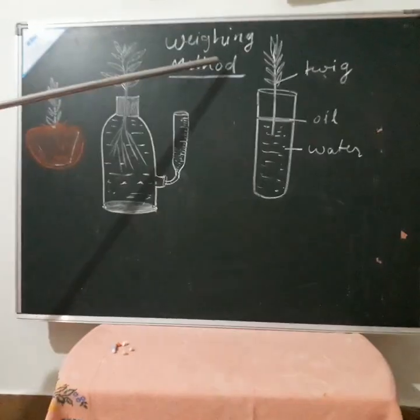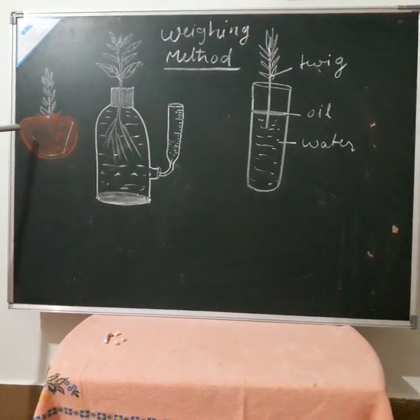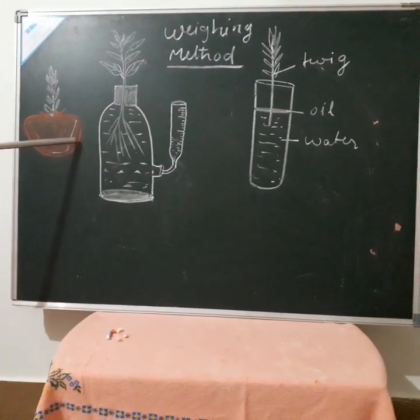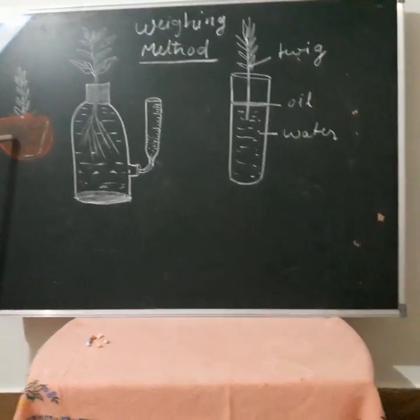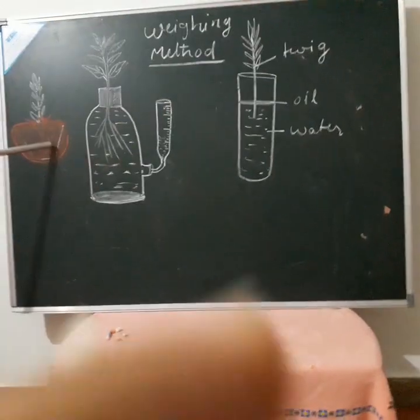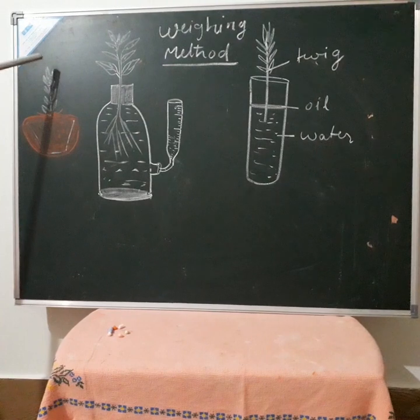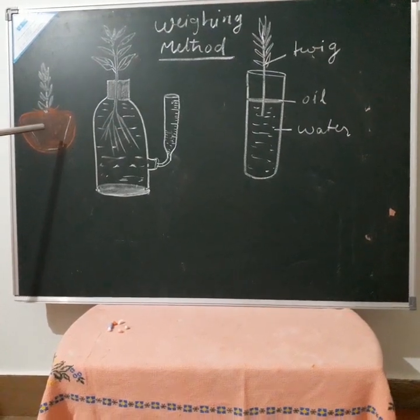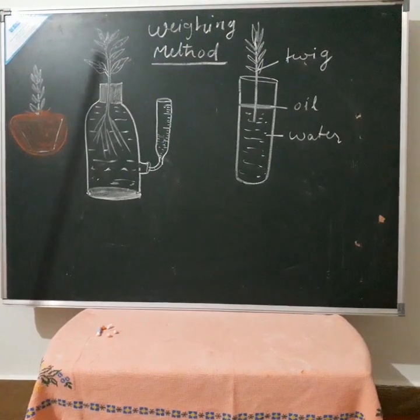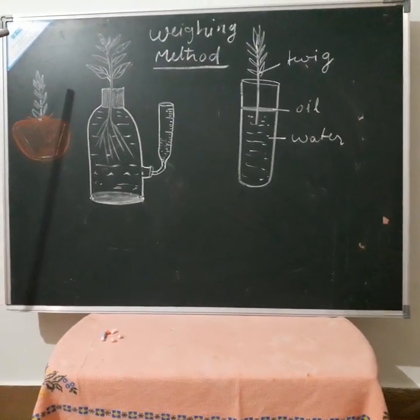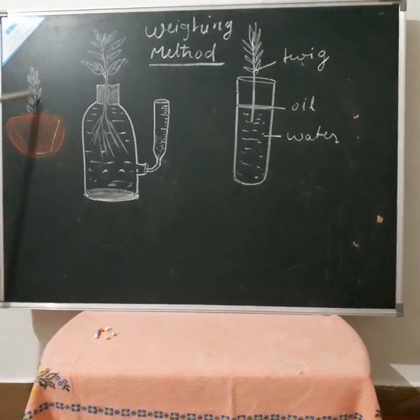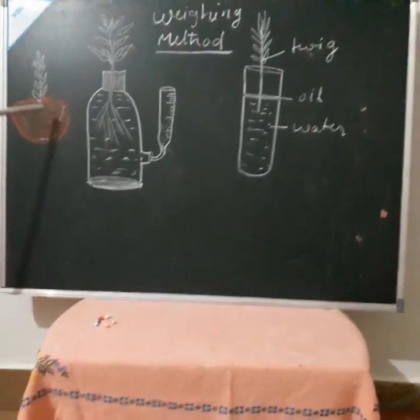To measure transpiration, a weighing method can be used. We take a potted plant and cover the whole pot with a polythene bag to prevent any loss of water by evaporation. Before placing the setup in sunlight, we take its weight, then leave it in sunlight for a few hours. We take the weight again — there will be a difference, meaning water was lost through transpiration, which reduces the weight of the whole setup.